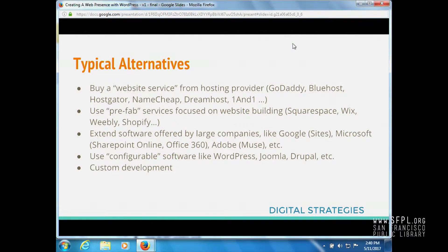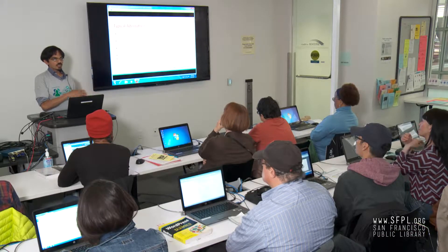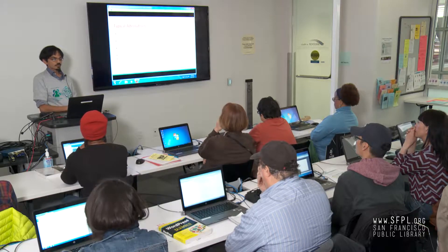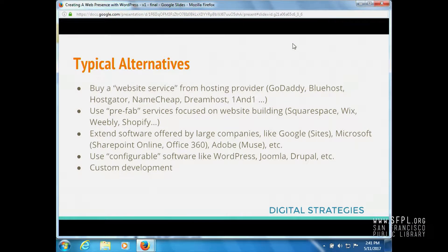Once you know you need to be on the internet, how do you get there? This is not even a full list of all the possible ways to create a presence for yourself. Typically you're faced with these options: either you buy a website service from a company that offers a lot of different things, and they say, hey, you can buy a WordPress website from us — pay $20 a month and you get a WordPress website. These are usually referred to as hosting providers, internet hosting providers, internet service providers, and one of their services tends to be easy-to-create WordPress websites.